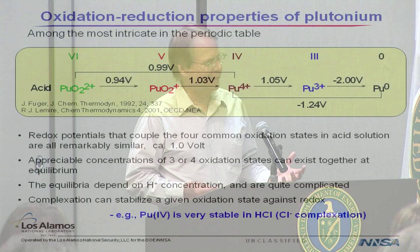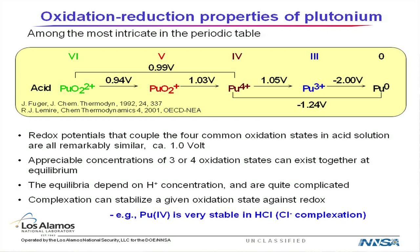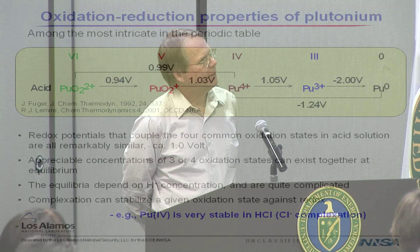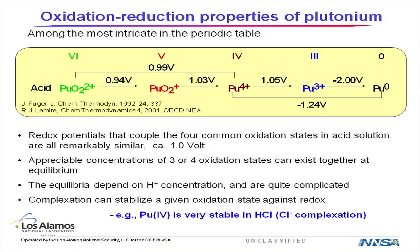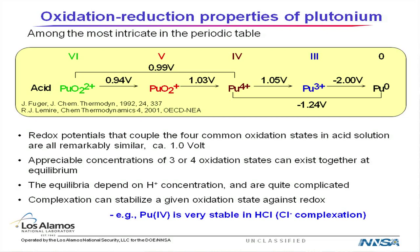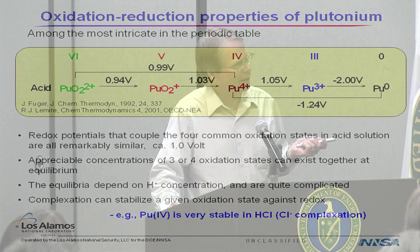The redox properties can get pretty complicated. Here are the potentials for changing between oxidation states for plutonium in aqueous acid solution. Going from 6 to 5, 5 to 4, 4 to 3 all differ by about a volt, and this leads to the situation where you can actually have all four oxidation states present in the same solution under certain conditions. What ligands you have in solution can stabilize different oxidation states — plutonium 4 binding most strongly to a ligand means adding something like chloride can preferentially stabilize the 4+ state over others.